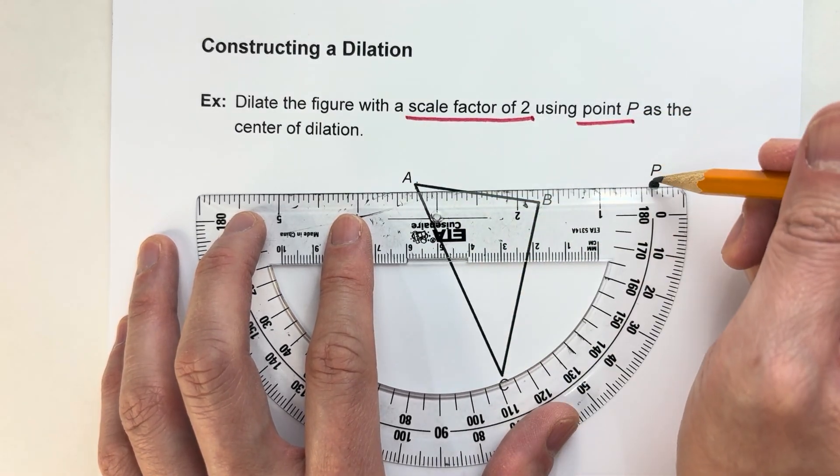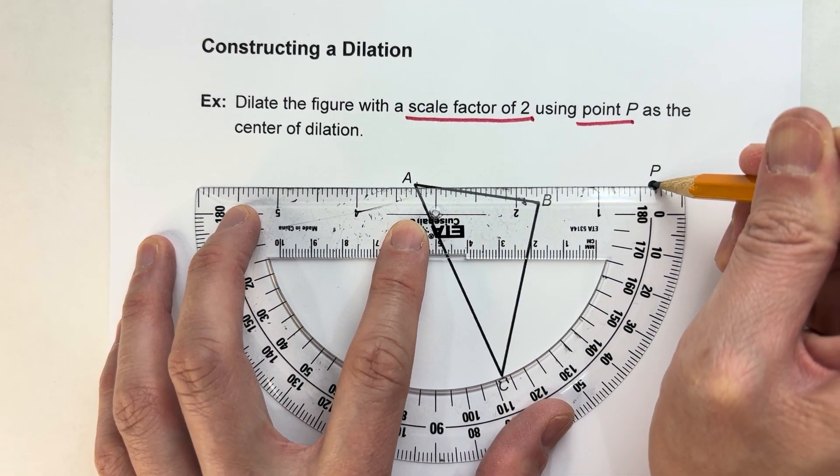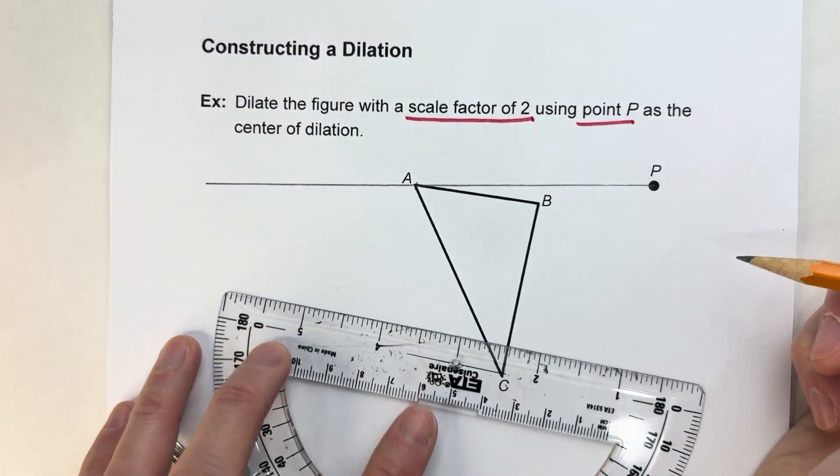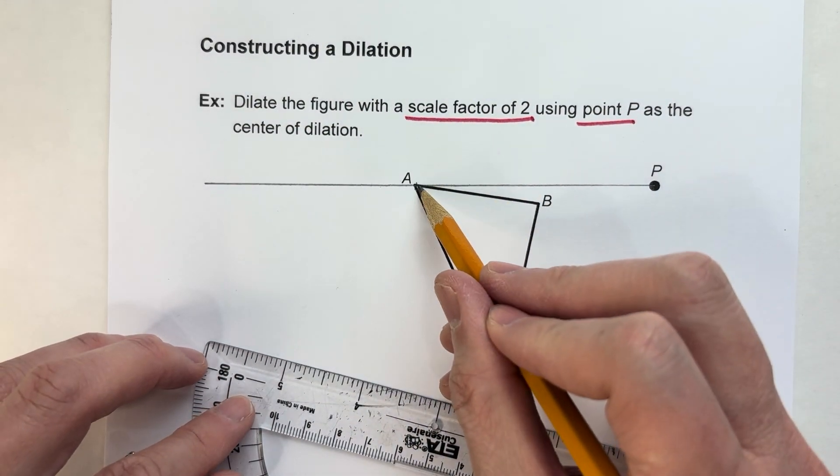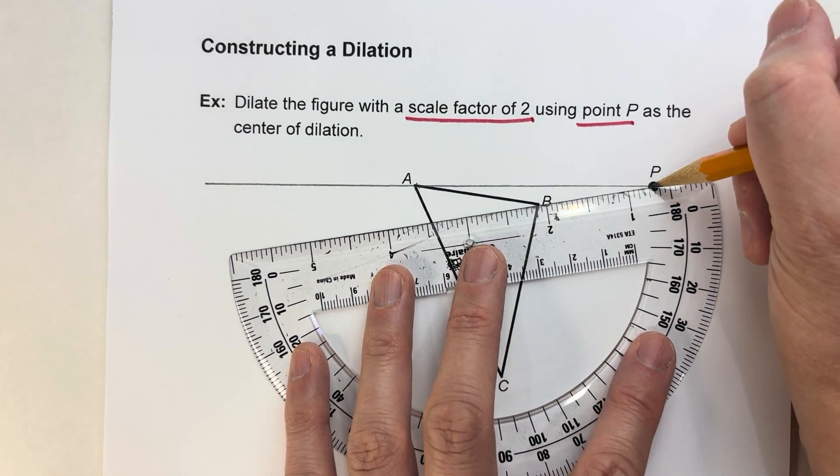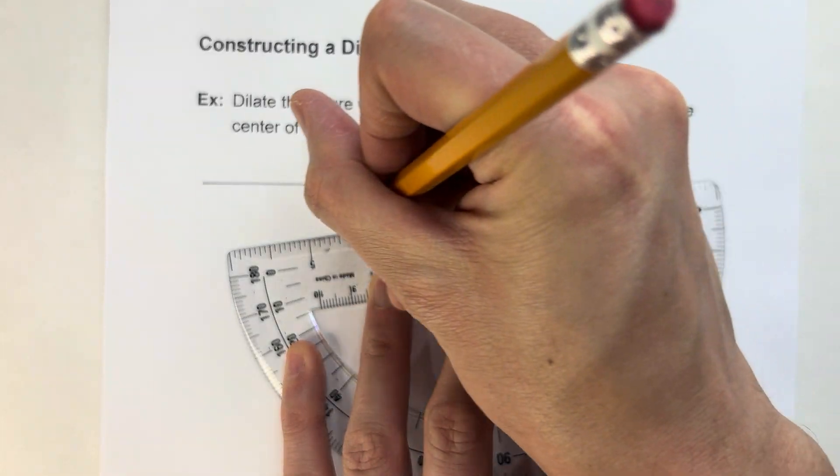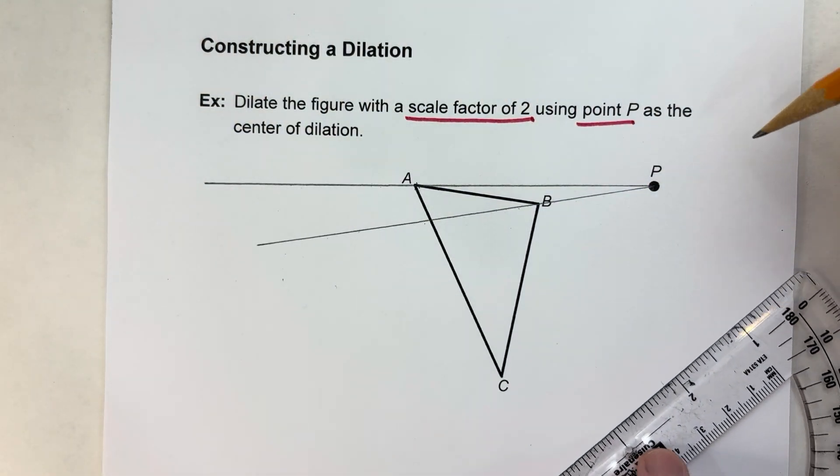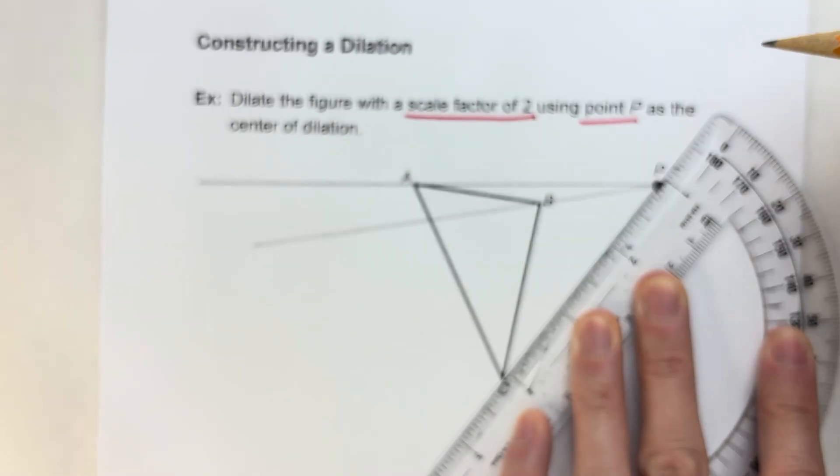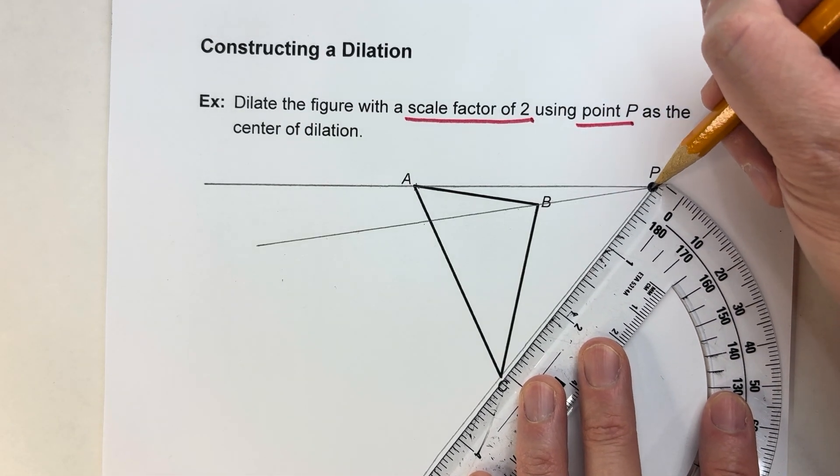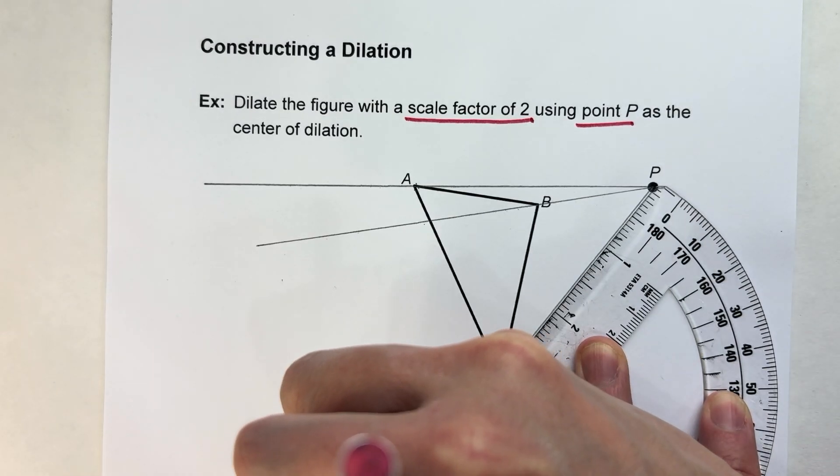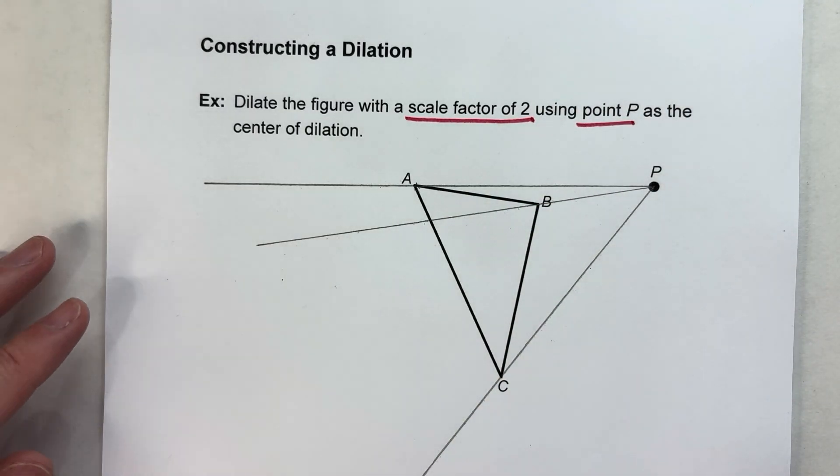So for example, point A, that vertex A, what I'm going to do is I'm going to draw a line from P through A there. So that's the path A is going to take away from P. And similarly, I'll do the same with B. And then I'll do the same with C. I think I need to make that longer. That looks pretty good.